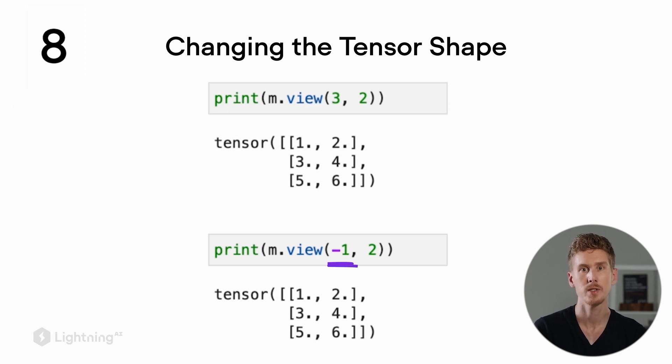In this case, we say that we want 2 columns, and because there's only one way to create a tensor with the same number of elements, it will automatically swap in the number 3 for us.